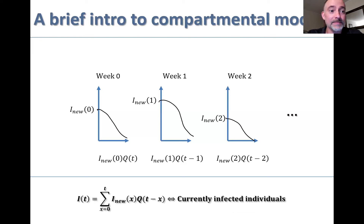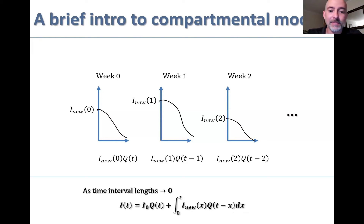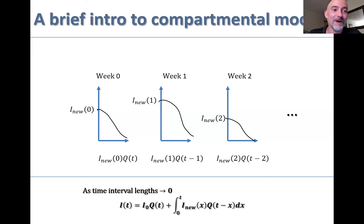Using this information, they could add up all of these components and get an estimate of the people currently infected. If we want to translate this to differential equations—whereas before this is discrete—we need to let the interval width go from weeks to something infinitesimally small. That gives us an integral equation, the continuous version of a discrete sum. This integral equation is essentially responsible for all the compartmental models that you see out there.